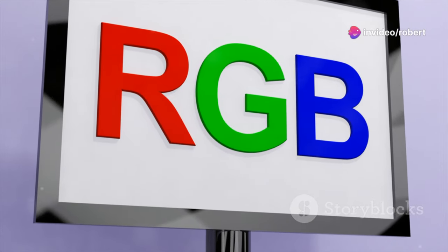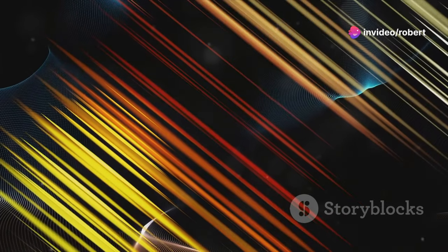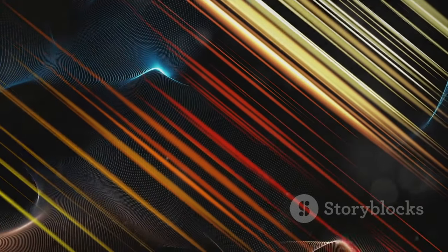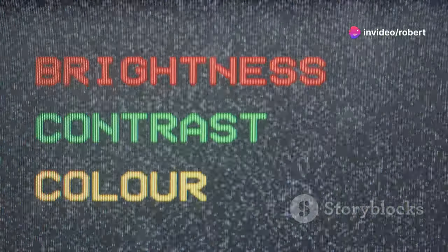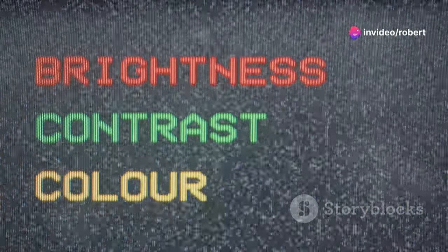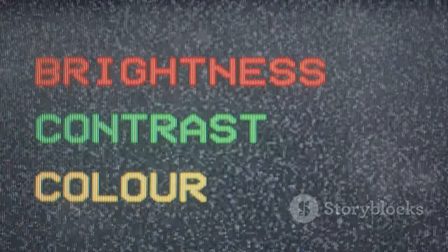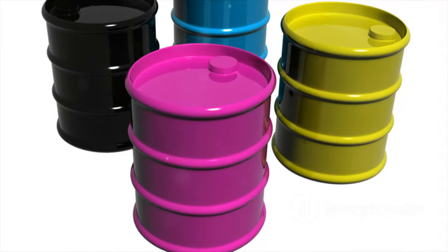RGB, with its vast colour gamut, is ideal for digital designs destined for screens. This model uses red, green and blue light to create a wide array of colours, making it perfect for anything viewed on a monitor, television or mobile device. However, its reliance on emitted light means that colours may appear less vibrant when printed. This is because the RGB model is additive, combining light to create colours, which doesn't translate well to the subtractive nature of ink on paper.